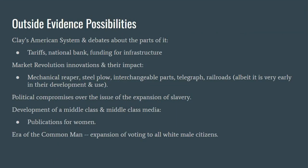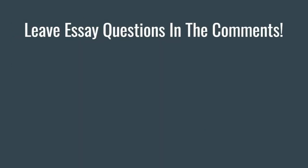Finally, some pieces of outside evidence — evidence that is not linked to any of the documents — could go towards aiding an argument. A few things that could have been woven nicely into an essay are Clay's American System, the Market Revolution's innovations and their impact, political compromises over the issue of the expansion of slavery, the development of a middle class and middle-class media specifically publications for women, and the era of the common man with suffrage expanded to all white male citizens. I hope this video helped to put you at ease about your essay, but feel free to leave essay questions in the comments and I will do my best to answer them.